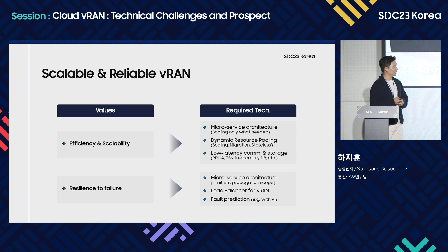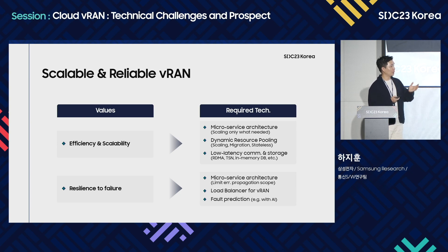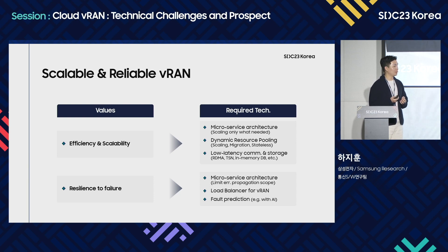페일리어에 강인한 시스템을 만들기 위해서도 마이크로 서비스 아키텍처는 유효합니다. 모노리틱한 시스템보다 작은 단위로 실행되기 때문에 특정 컴포넌트가 페일이 나더라도 전파 범위를 제한할 수 있는 장점이 있습니다. 또한 vRAN용 로드밸런서 개발도 필요하고, AI를 활용하여 기지국 파라미터 최적화나 폴트 프레딕션에도 많이 사용될 수 있을 것 같습니다. 굉장히 많은 데이터를 바탕으로 시스템이 잘못될 것 같다는 판단을 하게 되면 미리 사전 조치하는 용도로도 AI가 사용될 수 있습니다.